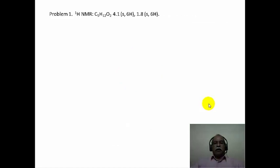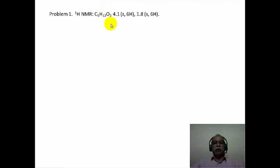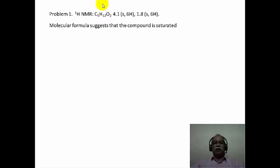Let us start with the first problem. The proton NMR data is given for a very simple molecule with a molecular formula C5H12O2. The molecular formula gives very important information regarding the degree of unsaturation or the number of double bonds present in the molecule. This particular molecular formula suggests that it is a saturated compound with a double bond equivalence of 0.